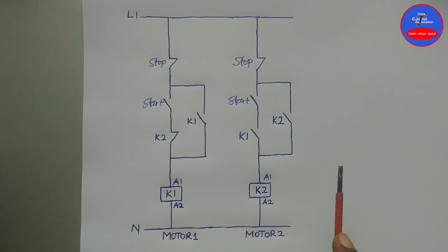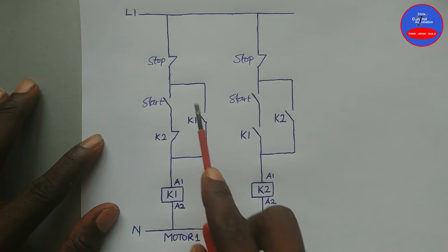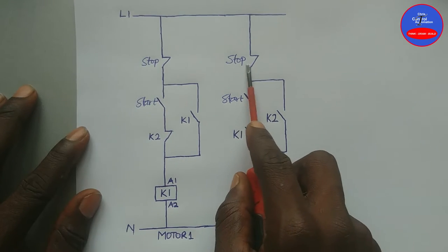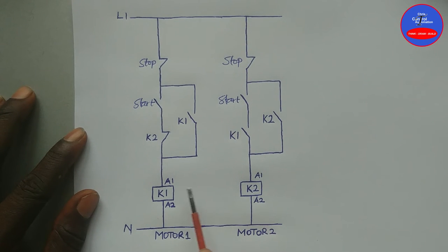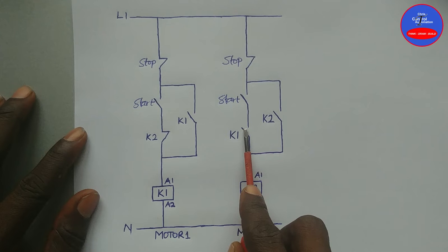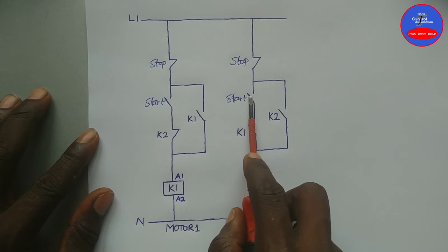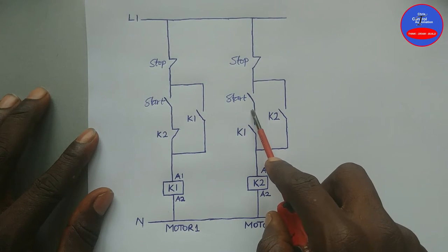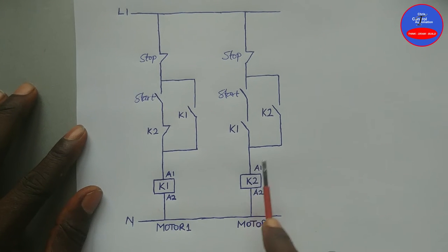As K2 is energized, this contact is open. Now we have two motors running: Motor 1 and Motor 2. We can de-energize each contactor using their stop buttons. When we press on the stop button of Contactor 2 it will de-energize, but because Contactor 1 is still energized this contact is closed. Therefore when I press on the start button again, current can flow through this close contact, through this close contact, and then through the close contact on K1 to re-energize K2.